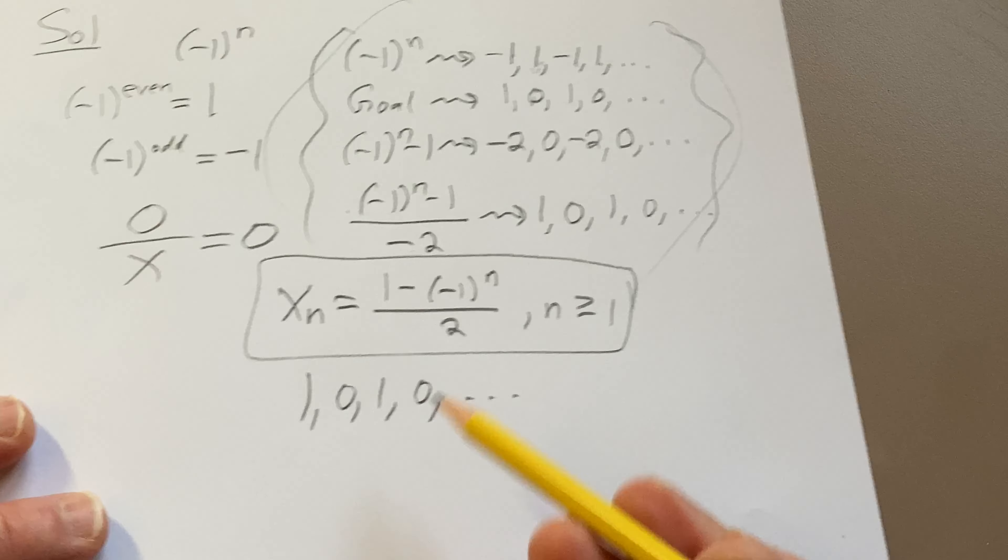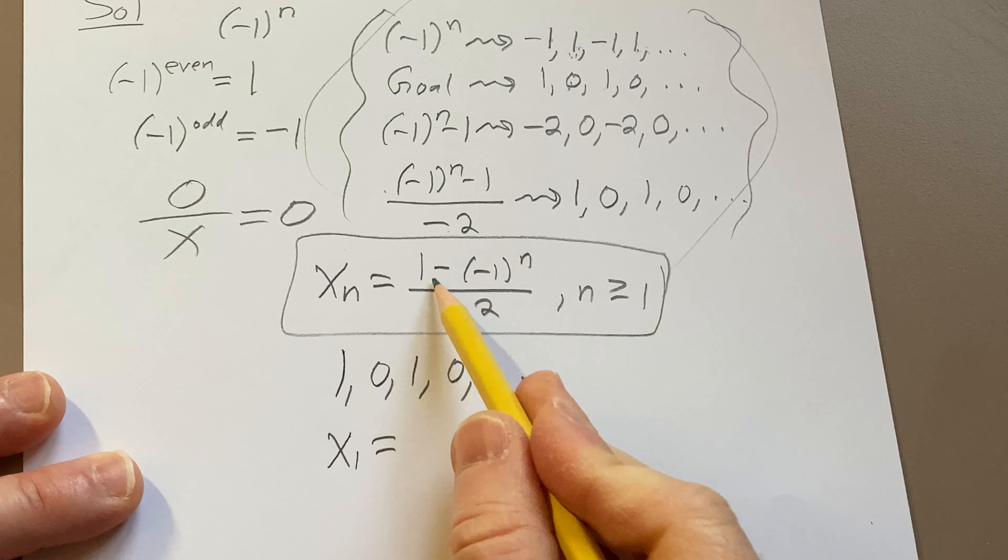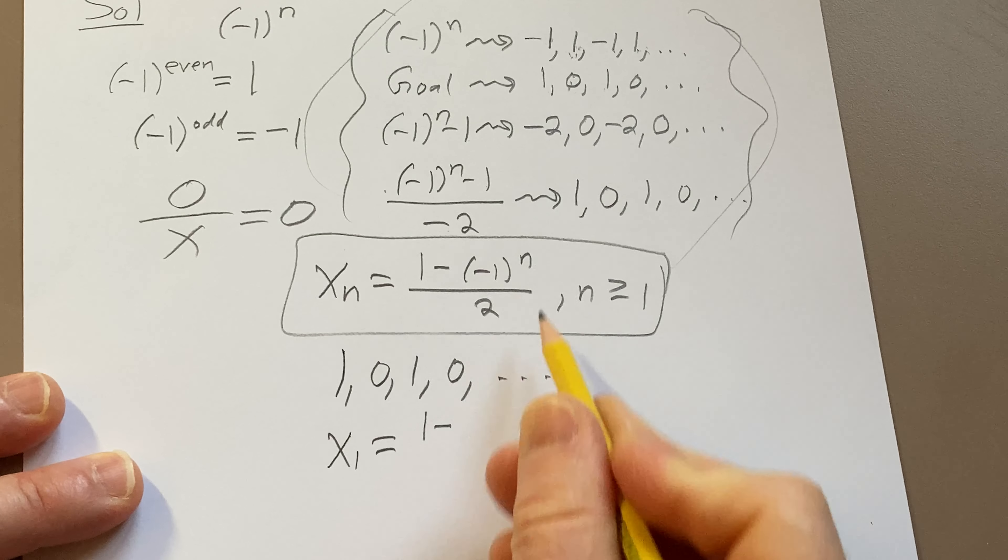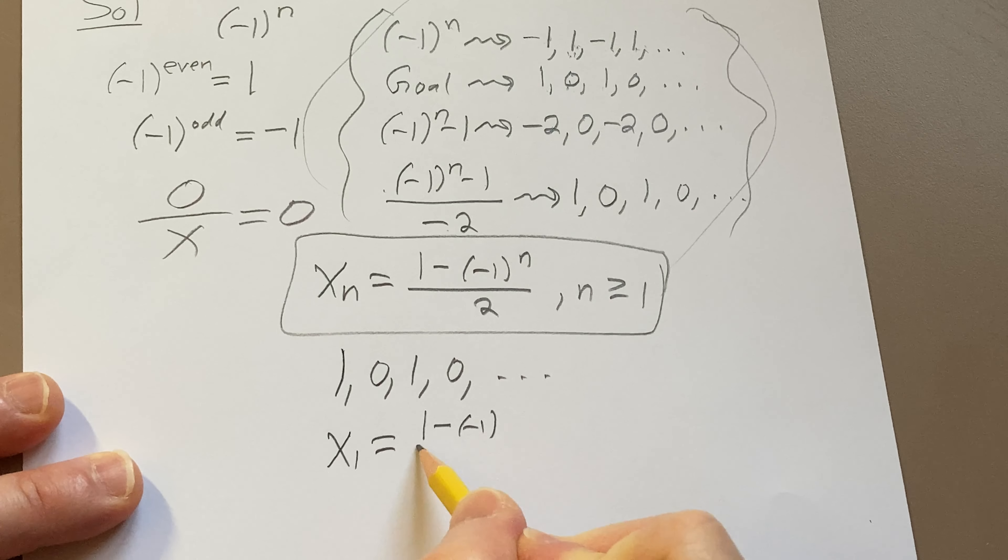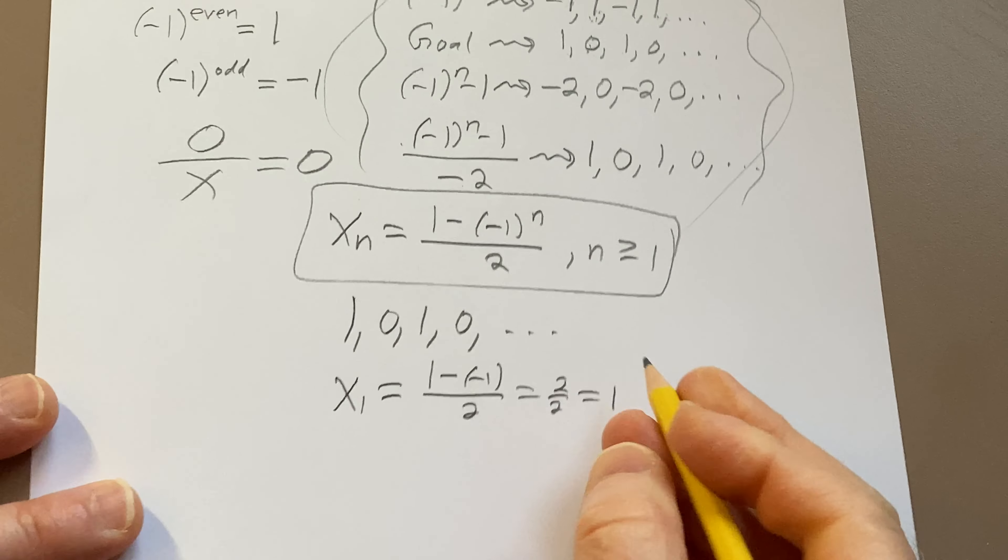And you can check. We should check some of these. Like, let's check 1. Plugging in 1, we have 1 minus, and then it's odd, so it's -1. 1 plus 1 is 2. Boom. All right, let's check 2.